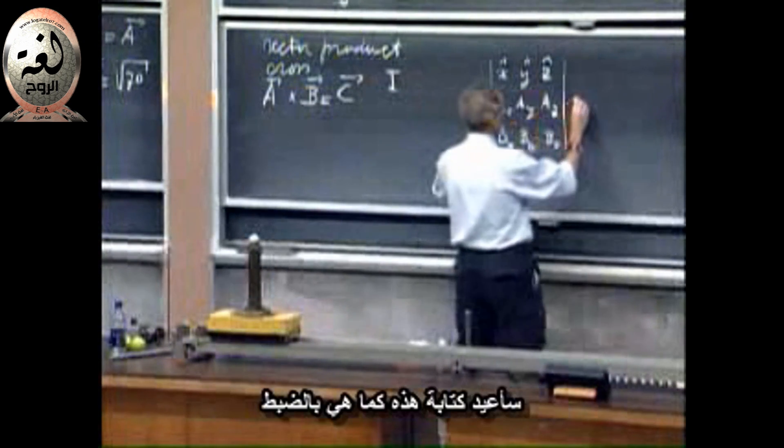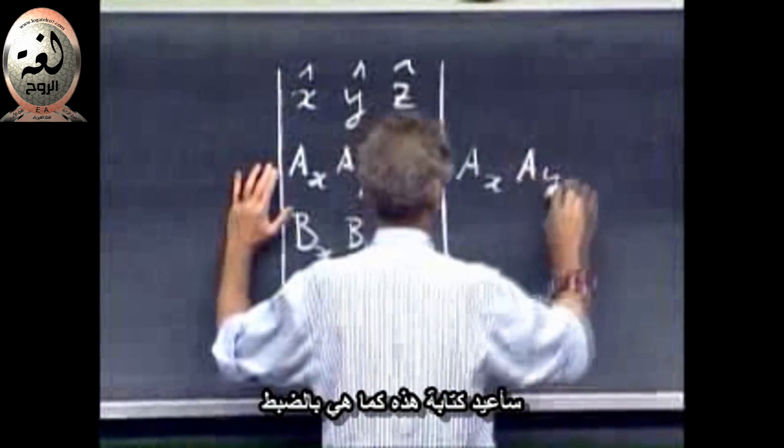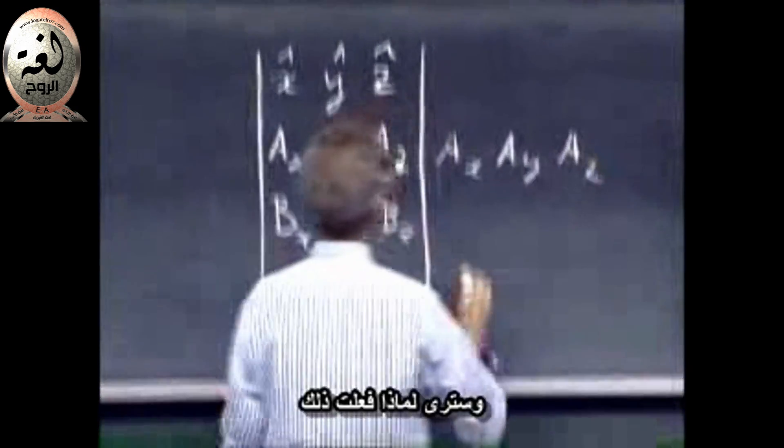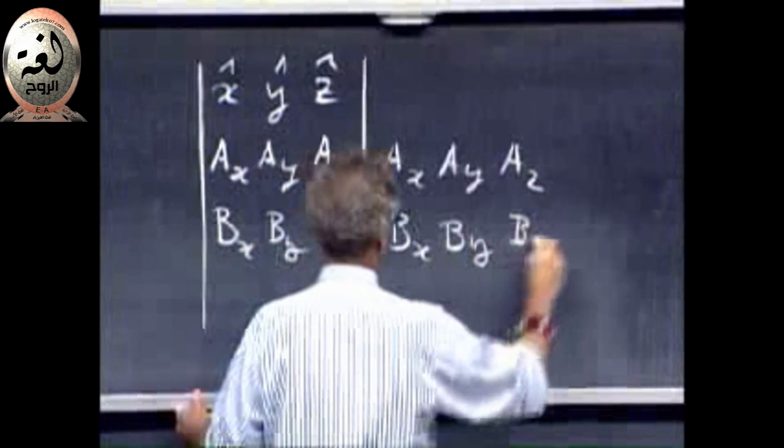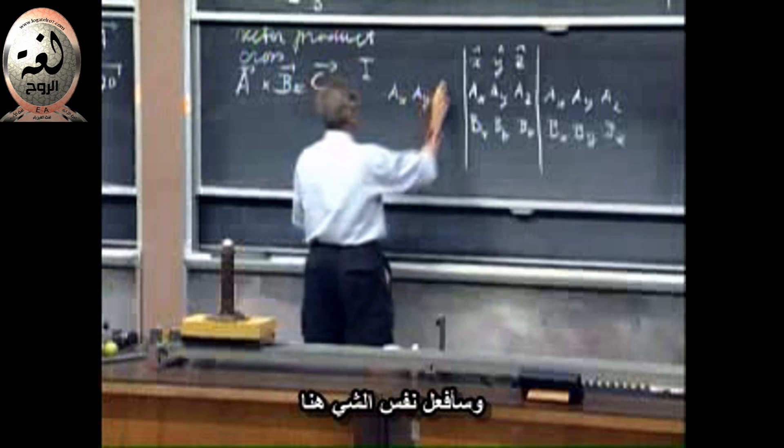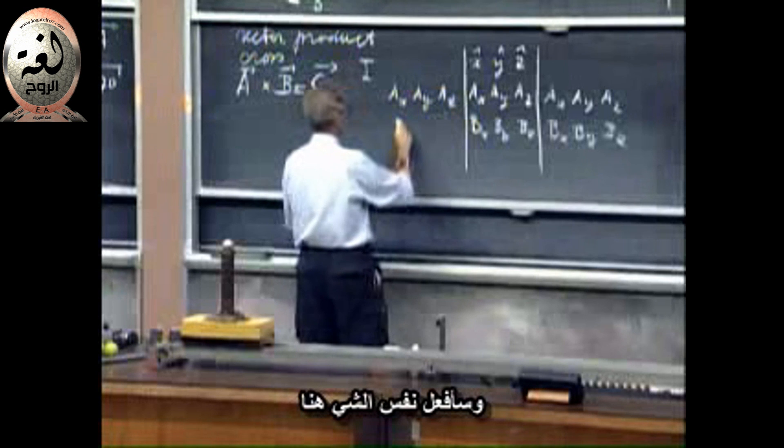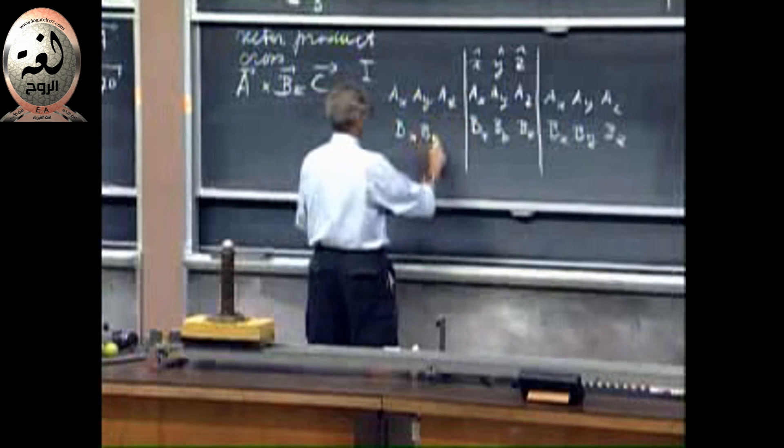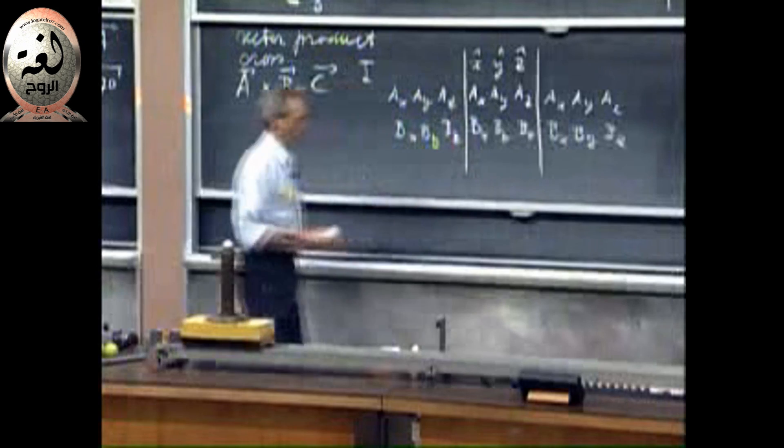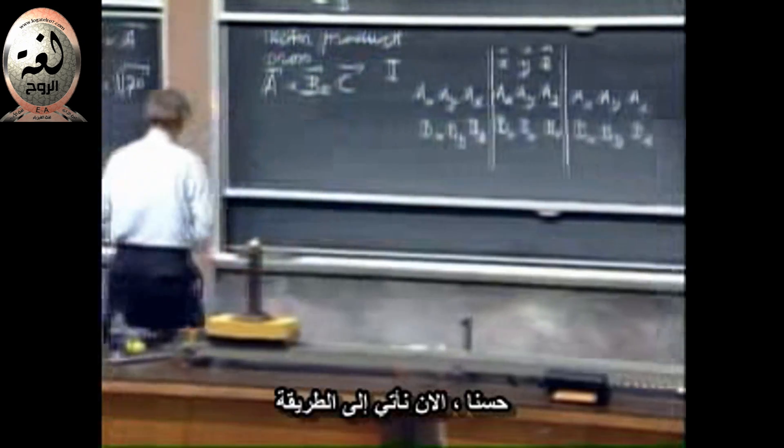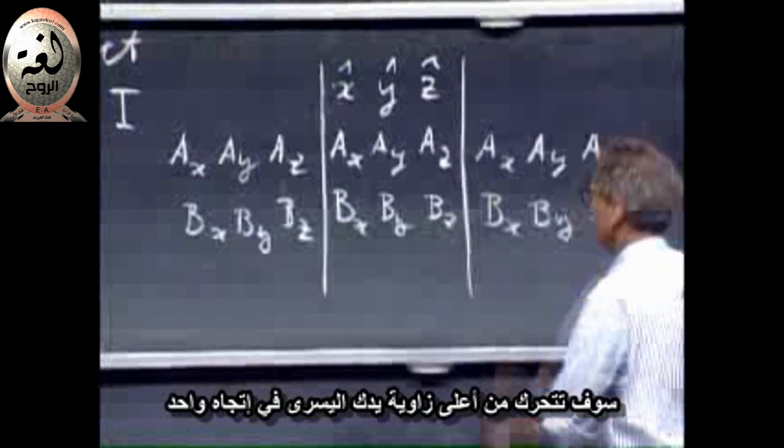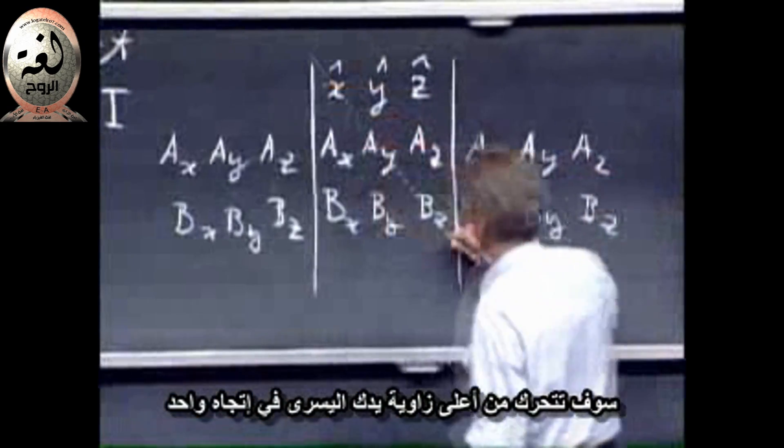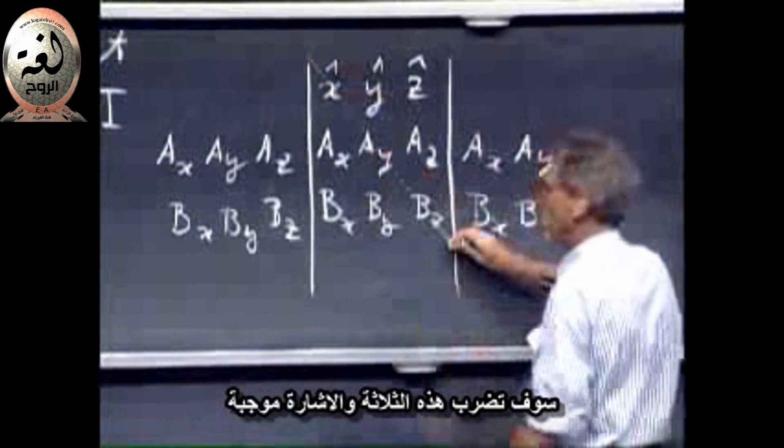I repeat this here verbatim. You'll see in a minute why I need that. And I will do the same here. Okay, and now comes the recipe. You take... you go from the upper left-hand corner to the one in this direction. You multiply them all three.